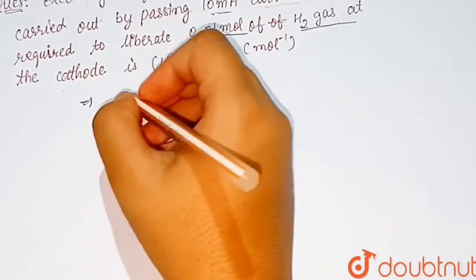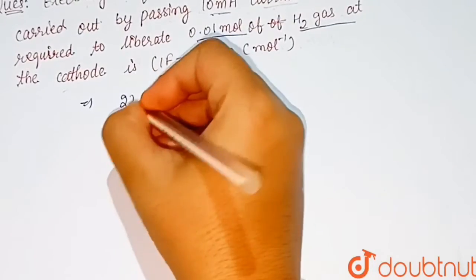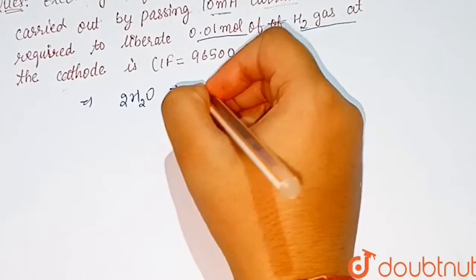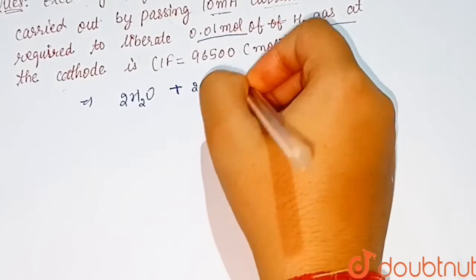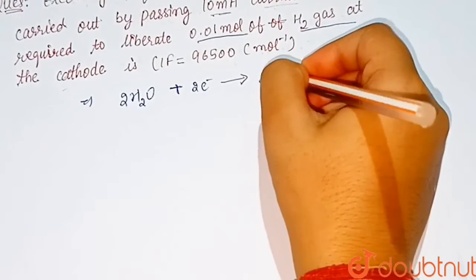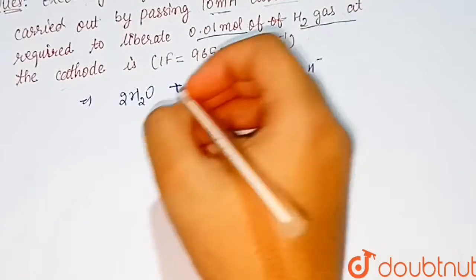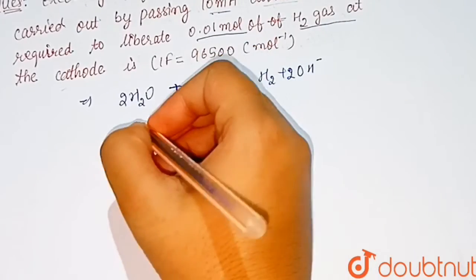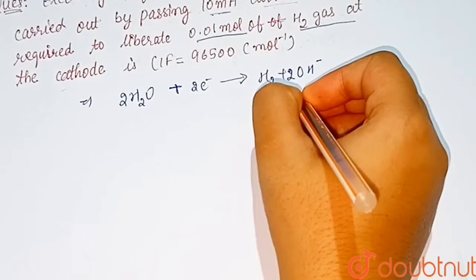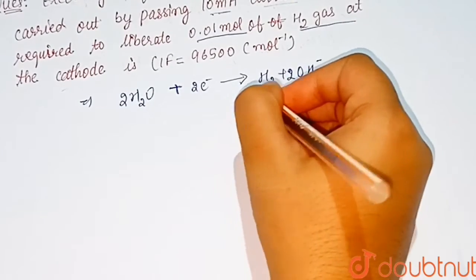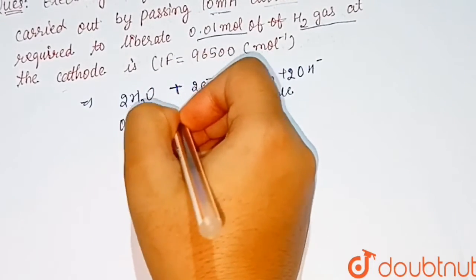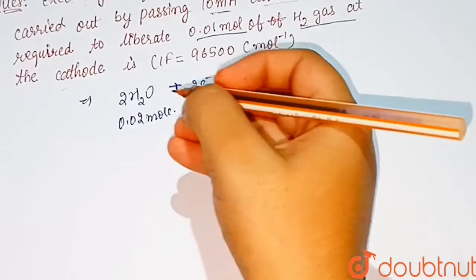So how do we liberate this gas? When water gains two electrons it will form H₂ plus OH⁻. Here is the balanced equation. So we can see that for 0.01 mole of H₂, we need 0.02 mole of electrons are consumed.